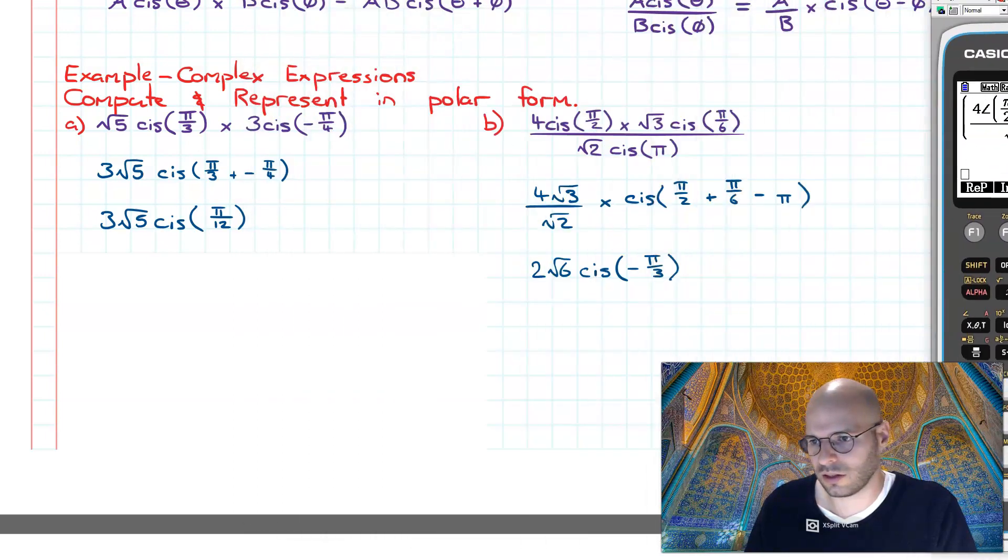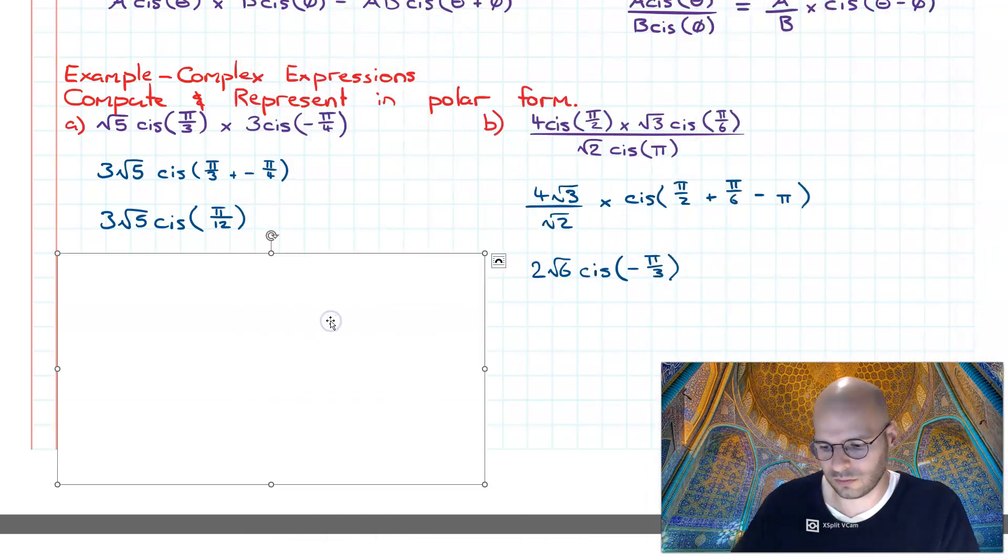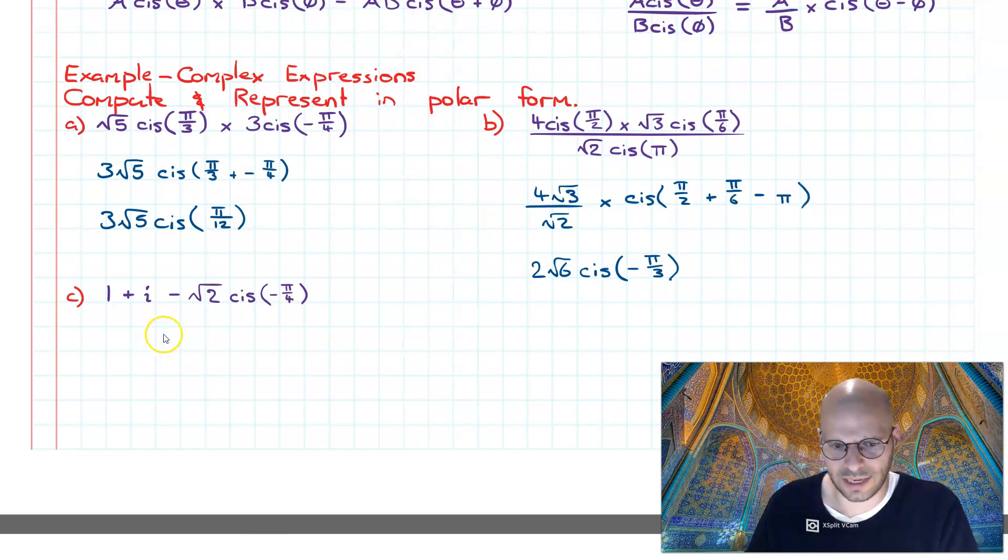Final question: we have 1 plus i minus root 2 cis negative pi on 4. So what we're dealing with here is we've got our polar form shown over here and we've got our rectangular shown over here, let's call it Cartesian form. And of course this symbol, it's not negative, rather it's minus, otherwise this wouldn't be in polar form.